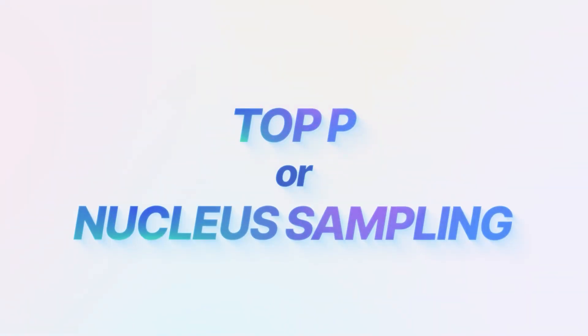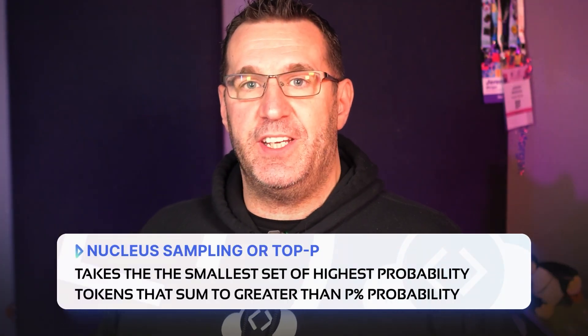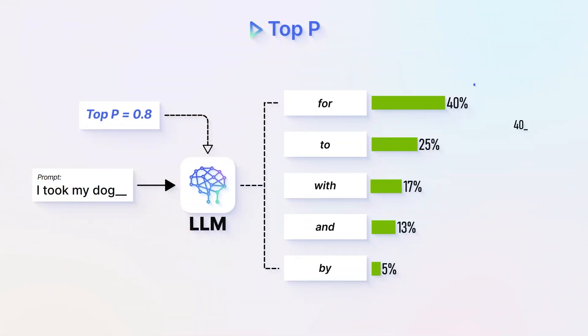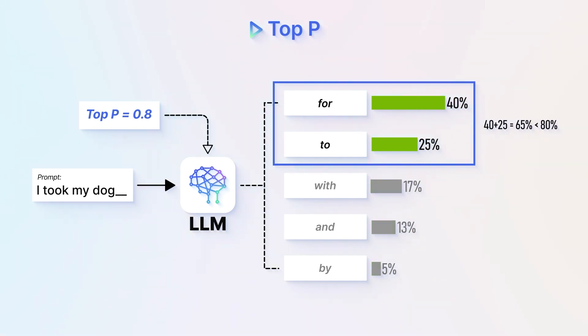Top P, or nucleus sampling, takes the smallest set of highest probability tokens that sum up to greater than P percent probability. With a higher top P setting, like 0.8, a model must consider options comprising 80% probability or more before acting, and it ignores the rest. Higher P-values will produce more expected, predictable responses because it concentrates probability on the best options. Lower P-values allow more diversity in responses, which includes more randomness, which can be useful as well.